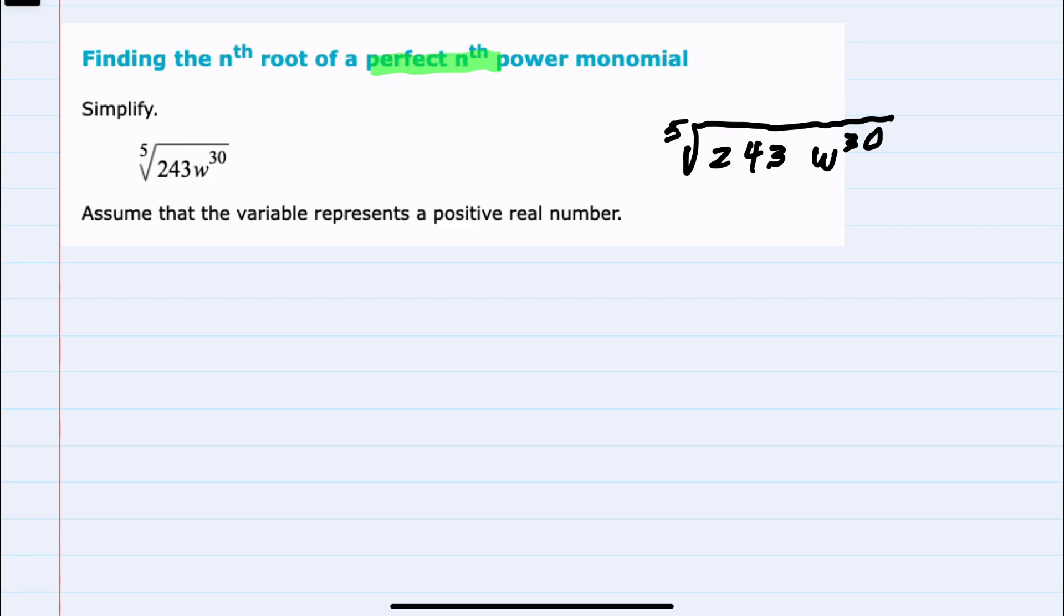Since these are perfect power monomials and our root here is a fifth root, we should be able to write each of these components with a fifth exponent.